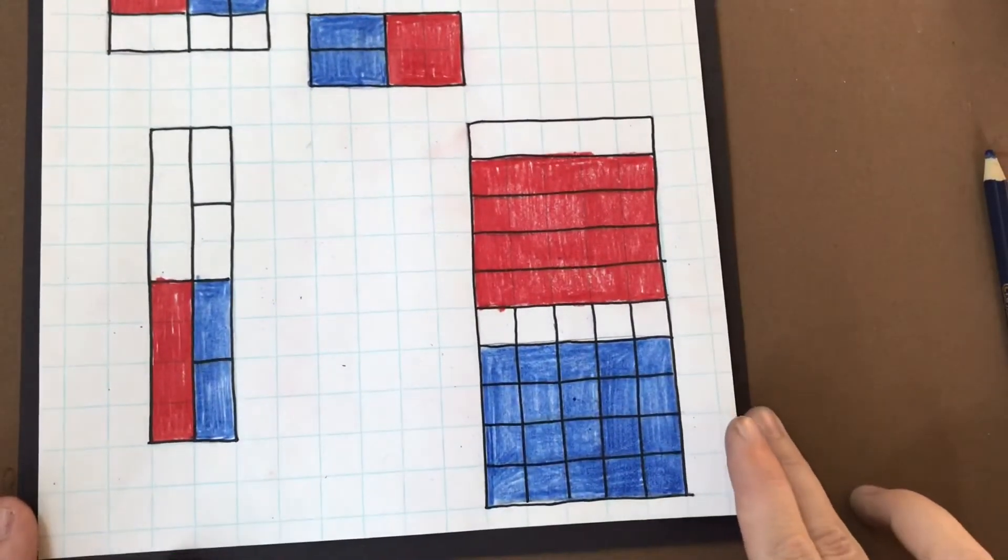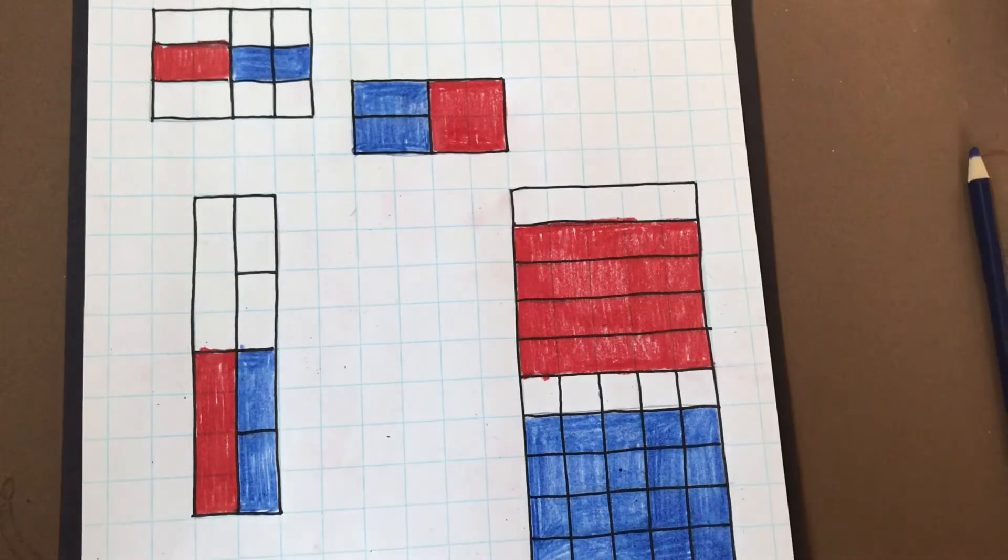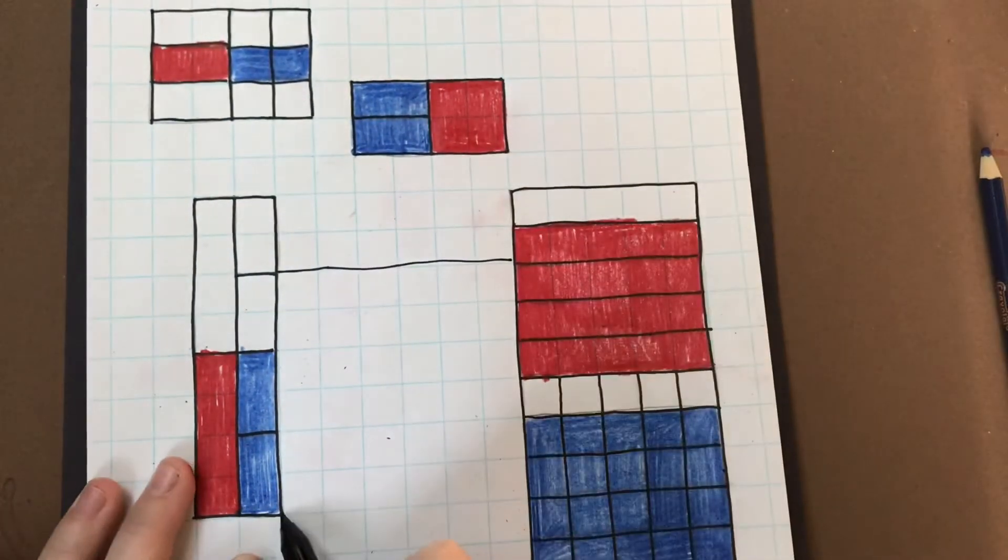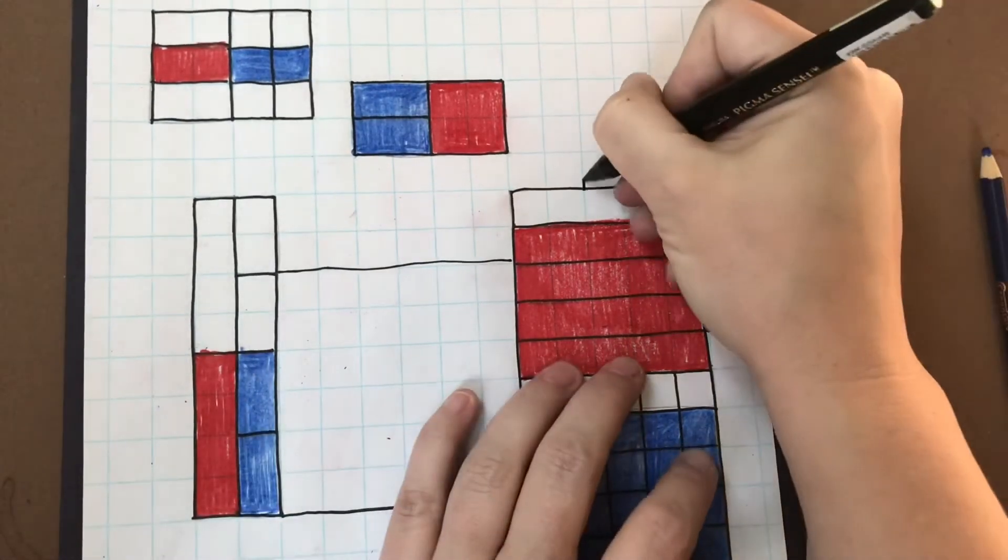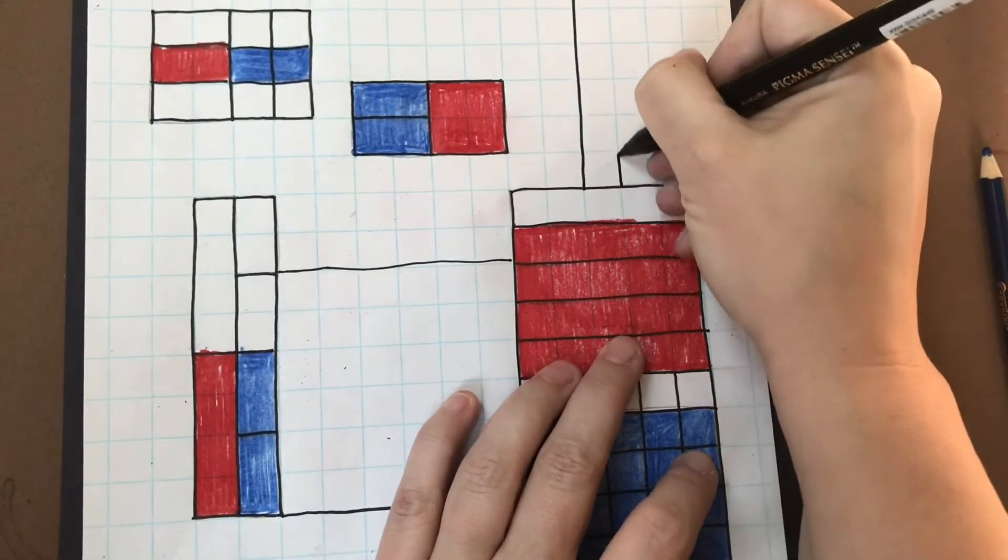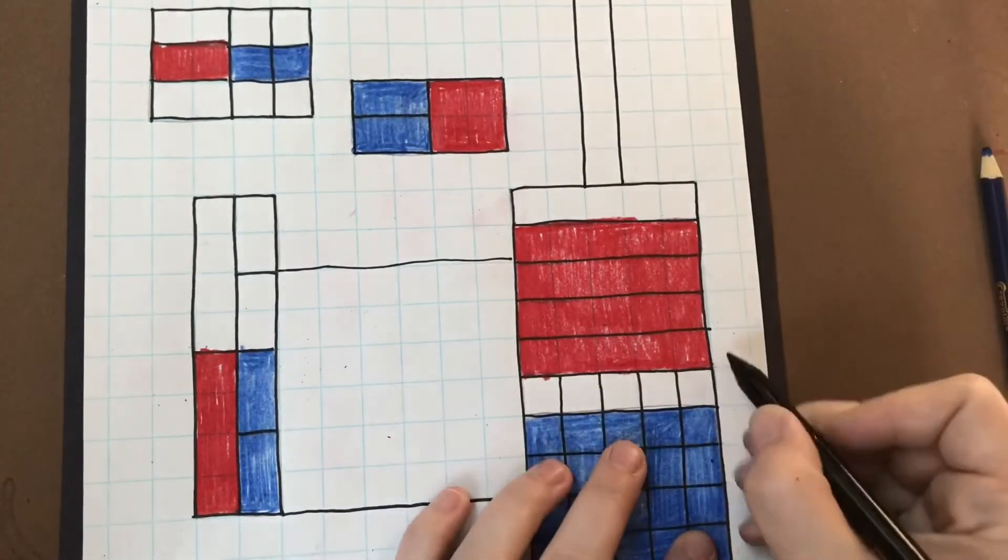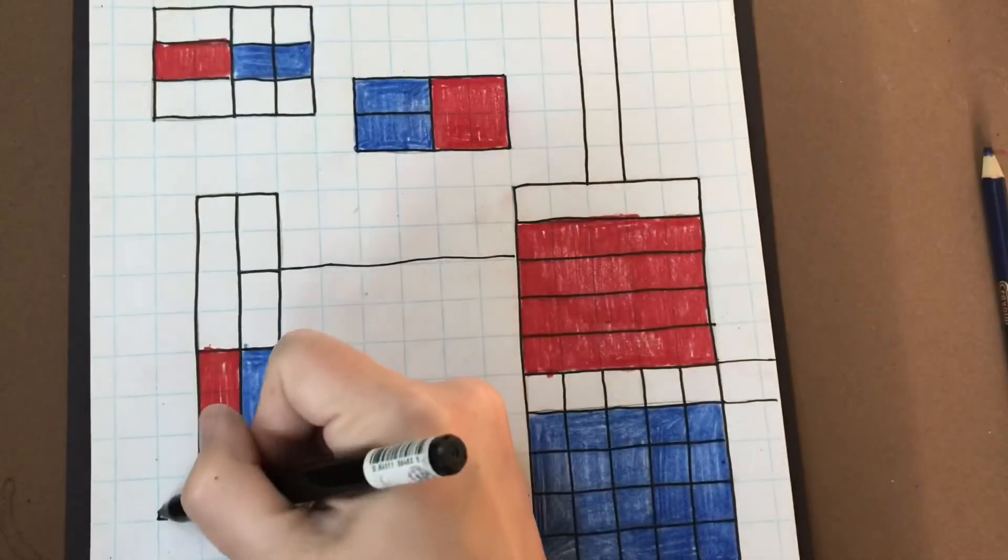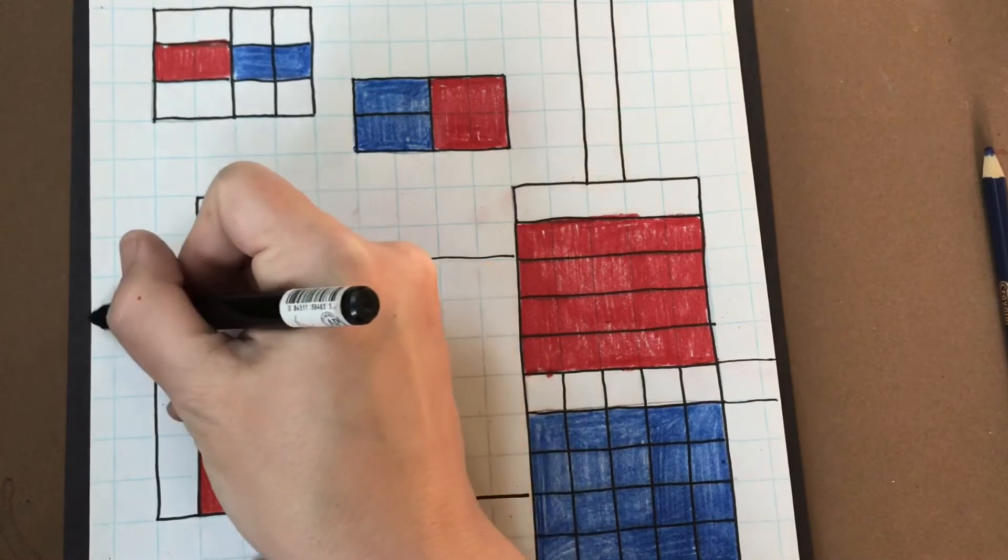So part two, once you have your three or four pairs of red and blue rectangles that are equivalent fractions, is you can kind of just add black lines to your art wherever you think they would look good. Inspired by Mondrian, I'm pulling my lines off to the side of the page.